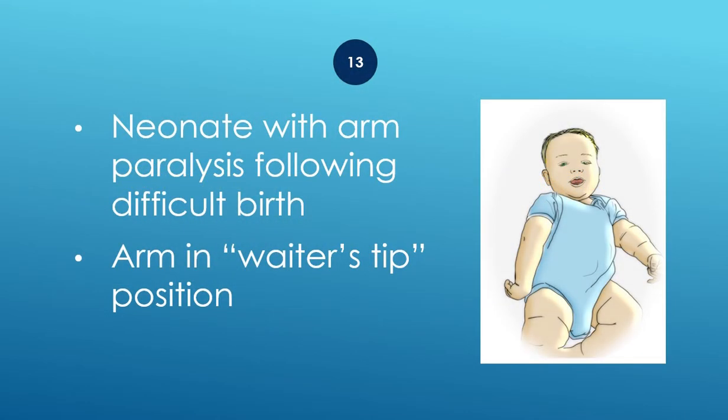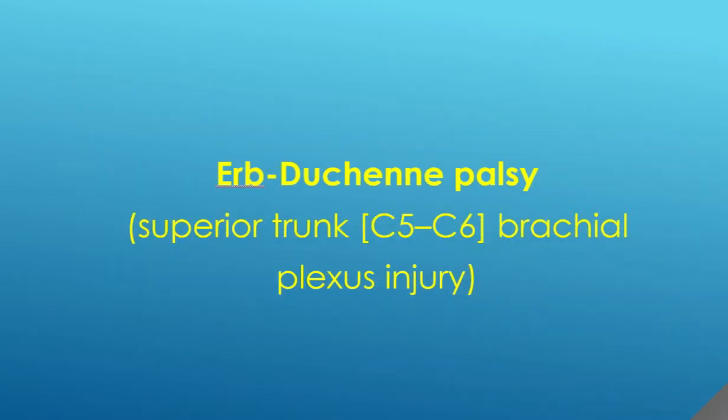Neonate with arm paralysis following a difficult birth, arm in waiter's tip position — Erb-Duchenne palsy. Brachial plexus injury of the superior trunk at C5–C6.